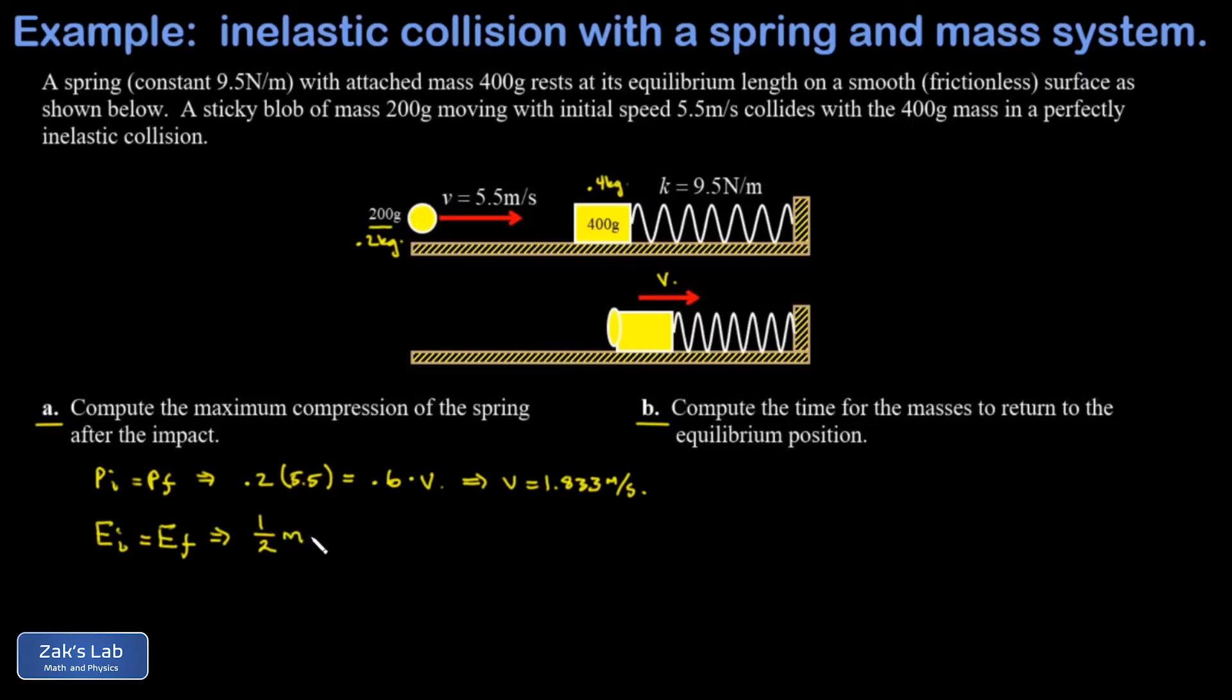And then again, when I get to the point of max compression, all the energy is going to be spring potential energy, so I'll call it one half k x max squared. And it's the x max that we're after. So we can multiply by two on both sides, solve for the maximum compression. So we divide by k and square root the result.